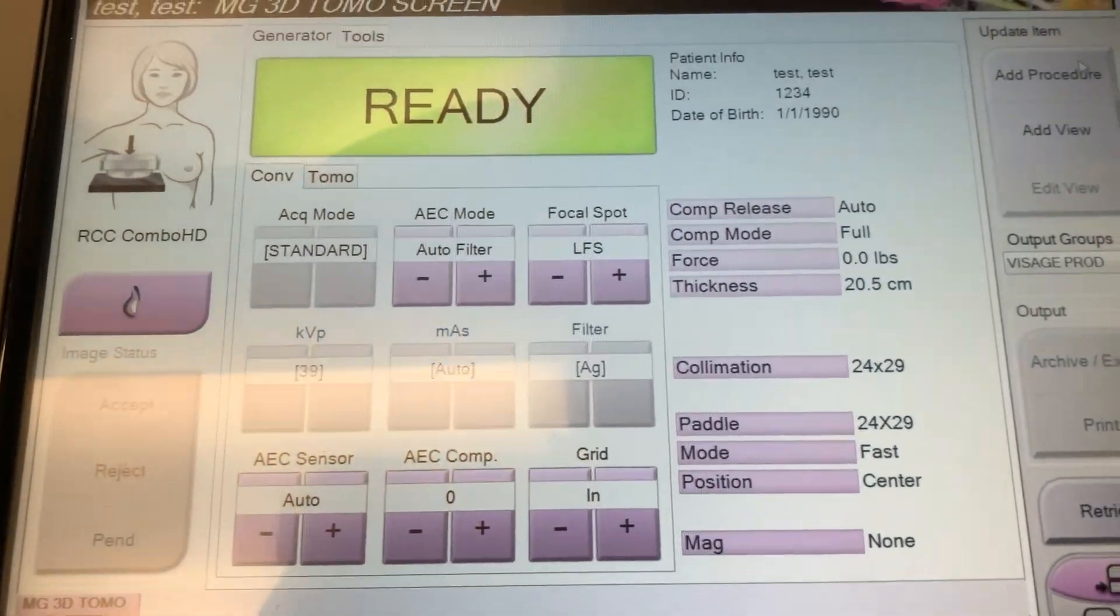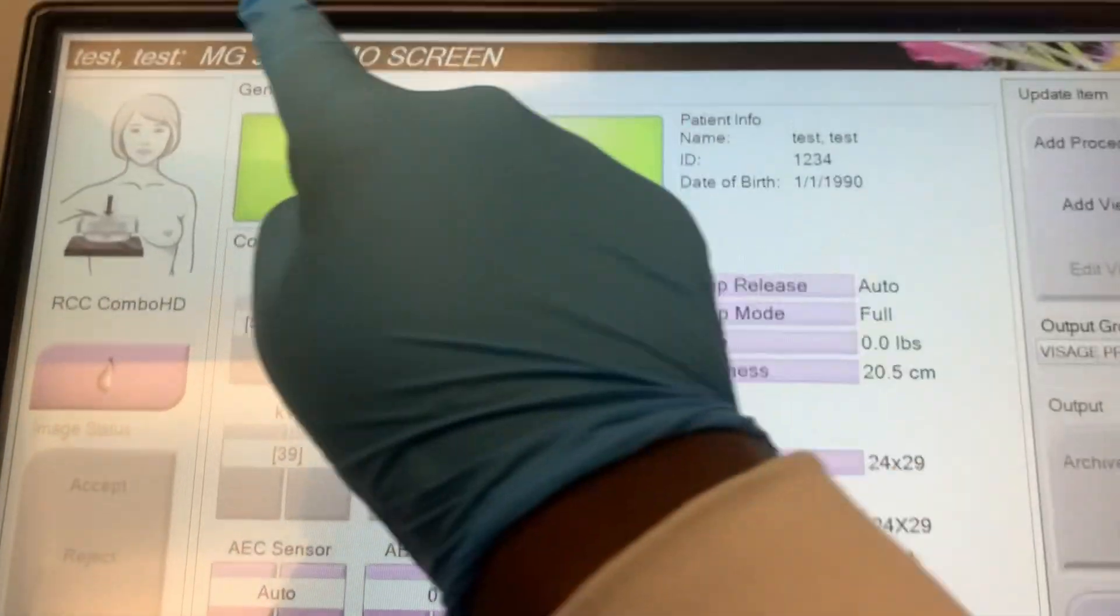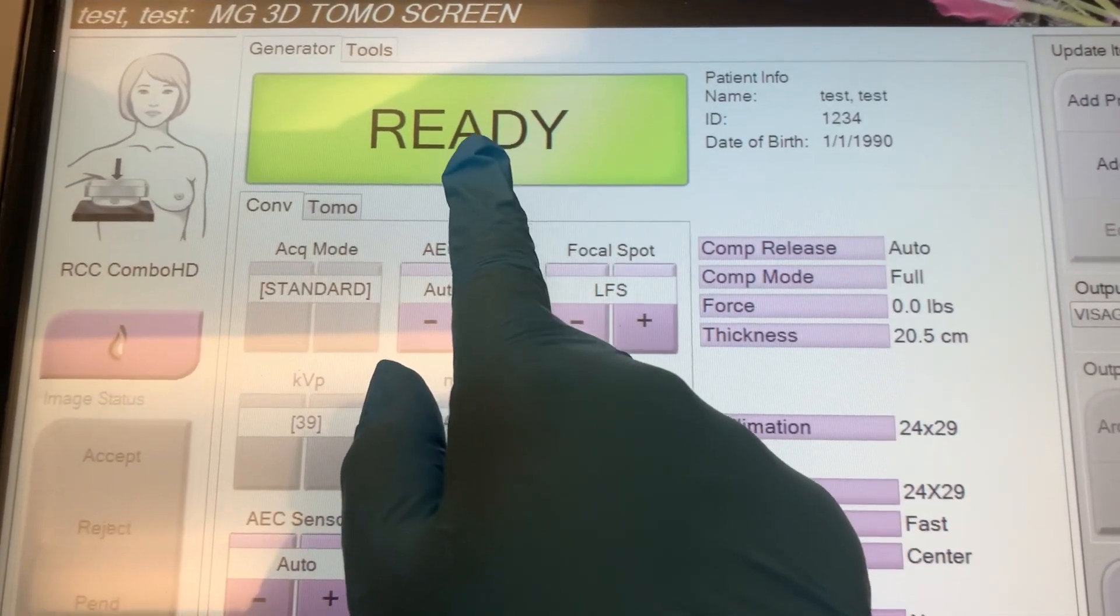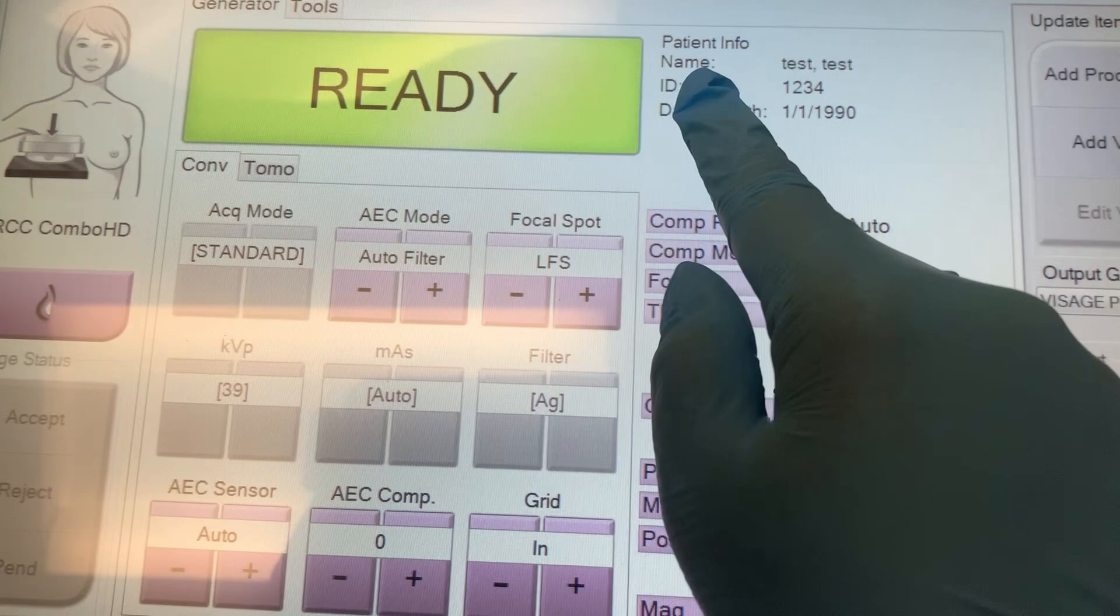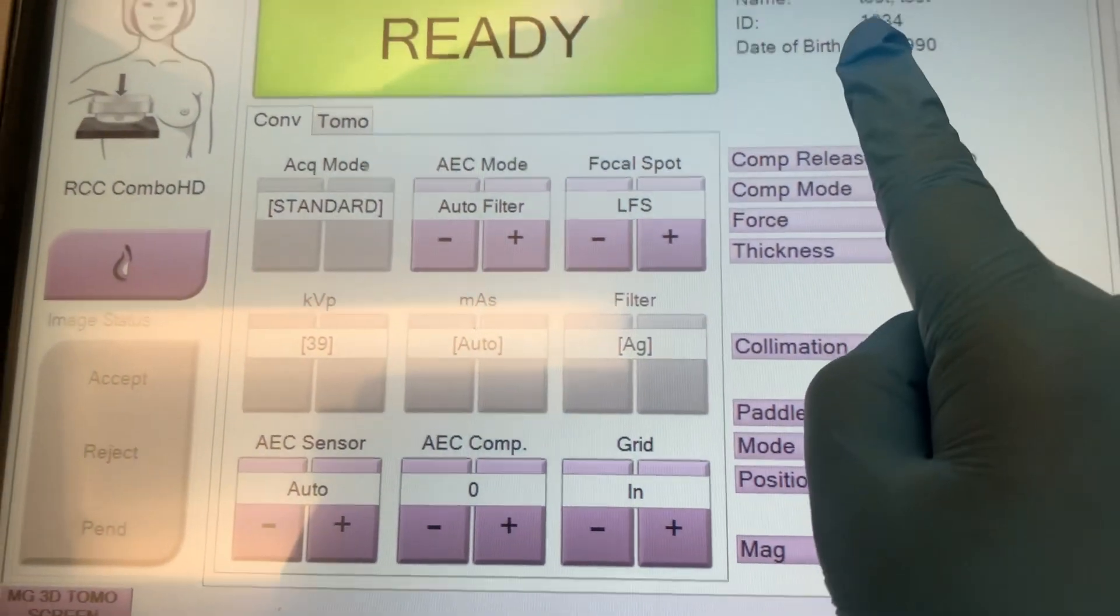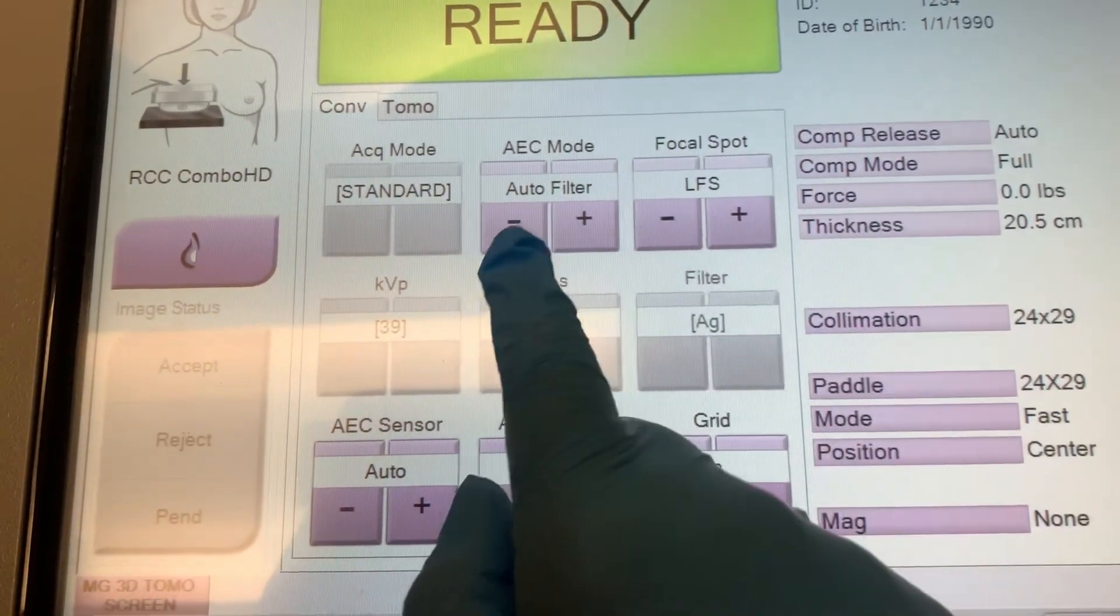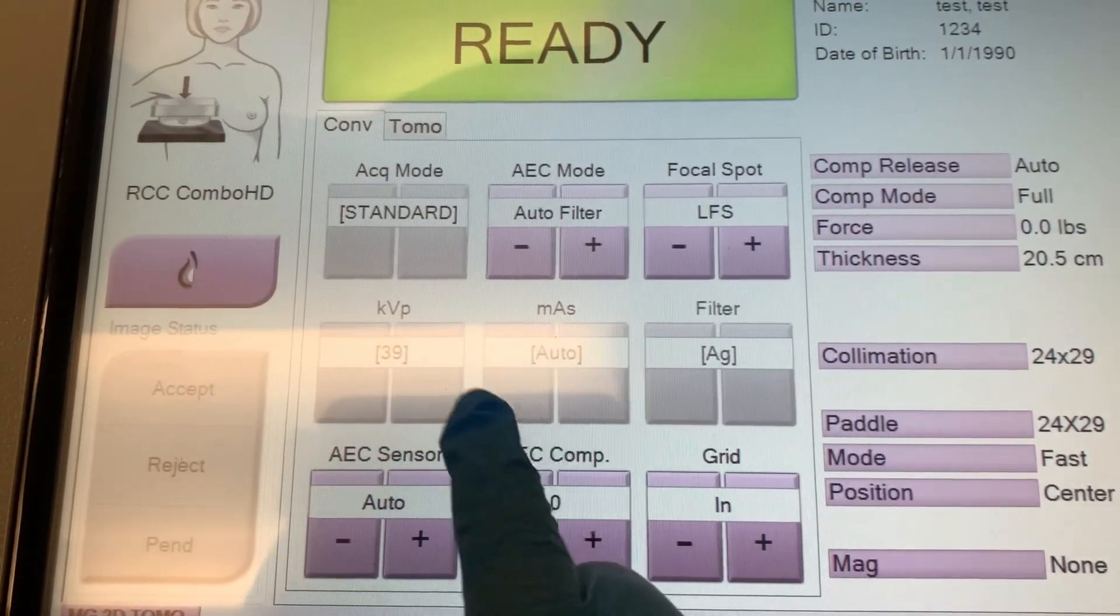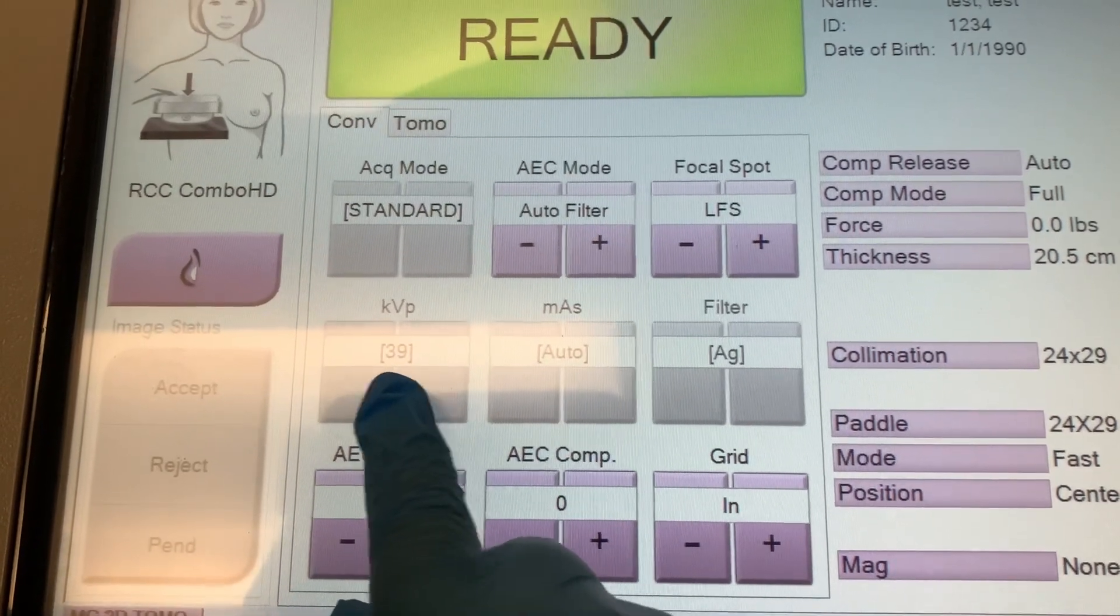All right, so this is how the actual machine will look. Right here, it will show what the patient's having done. It will let you know when you're ready. And then the patient's information, like their name, patient ID number, date of birth will be right here. So make sure this is correct. And then right here, this is what I was telling you all. How you see the KVP, it's at 39.